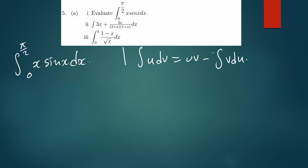But how do you choose which one is u and which one is v? We use a mnemonic word called LIATE: L stands for logarithmic functions, I for indices, A for algebra, T for trigonometric functions, and E for exponential functions. In this expression we have a trig function and an algebraic function, and algebra comes earlier than trig in LIATE.